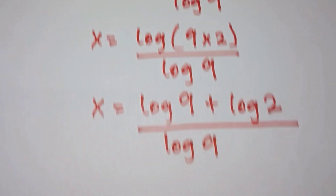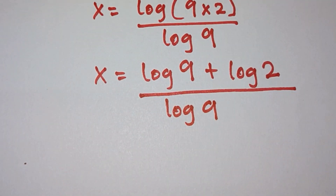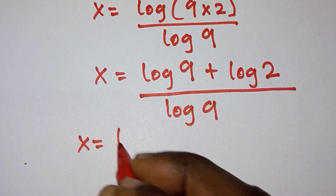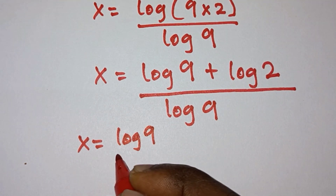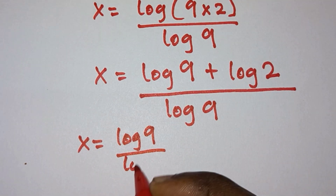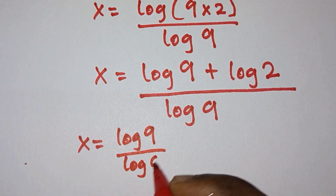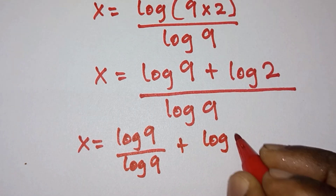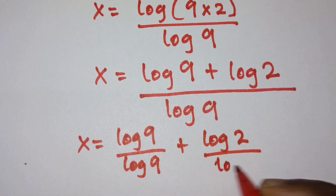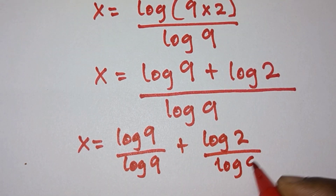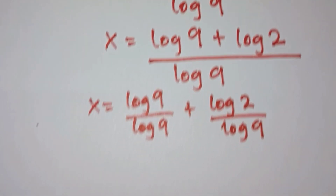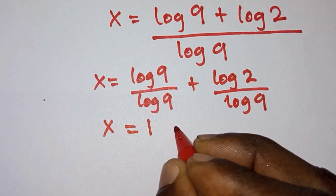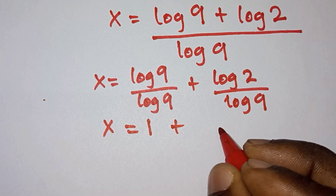If we split this fraction, we're going to have x is equal to log 9 divided by log 9, plus log 2 divided by log 9. And we know that log 9 over log 9 is equal to 1.